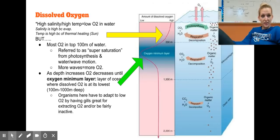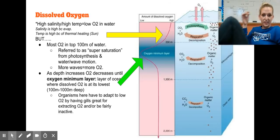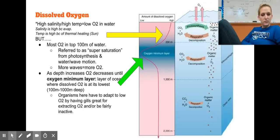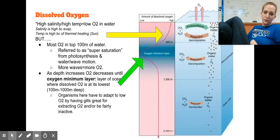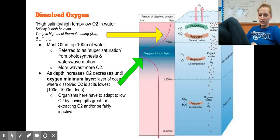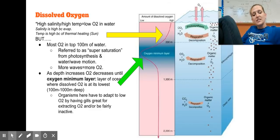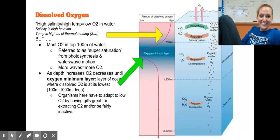As depth increases, oxygen decreases until we hit the oxygen minimum layer between 100 and 1,000 meters deep. In this zone, there's no photosynthesis — only respiration and some decomposition. There's very little organisms adapted to live there because oxygen is so low — they can't do many metabolic processes. Organisms here have really specialized gills, an adapted form of hemoglobin that transports oxygen, and eat very rarely — only a couple times a year — because they don't have the oxygen to do metabolism.